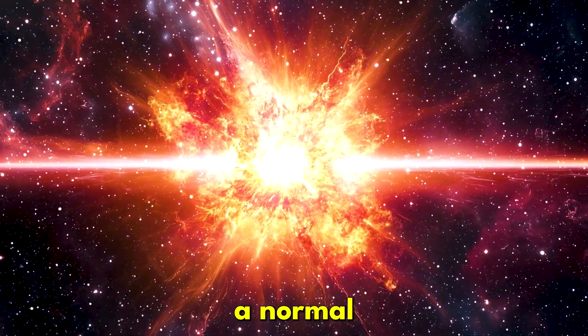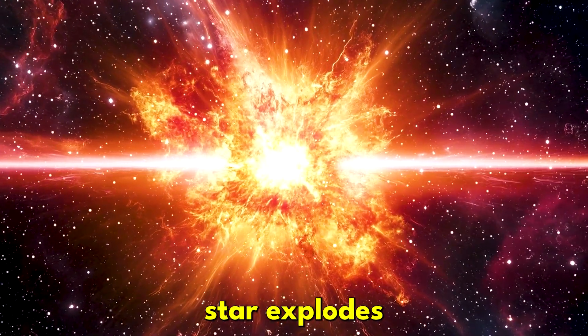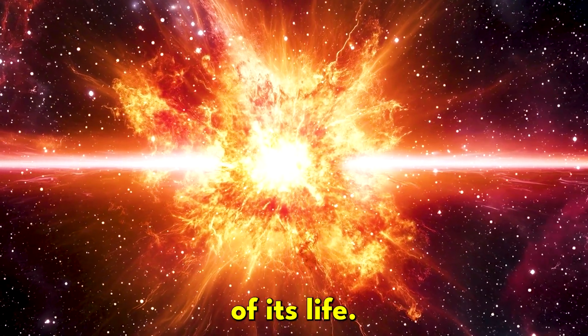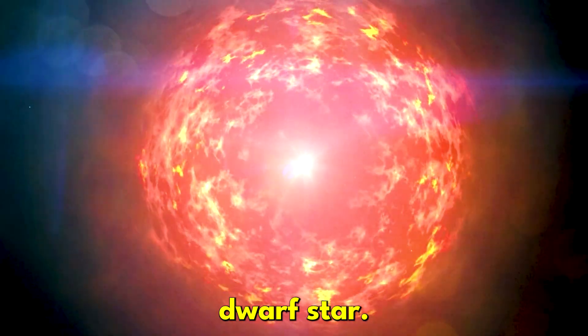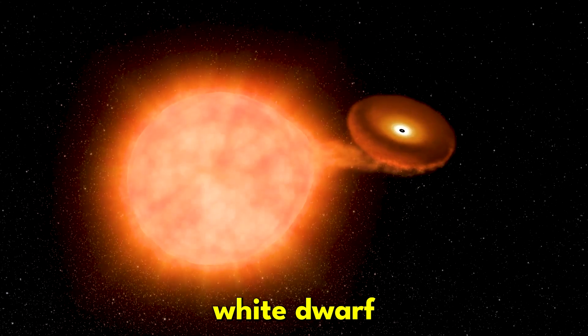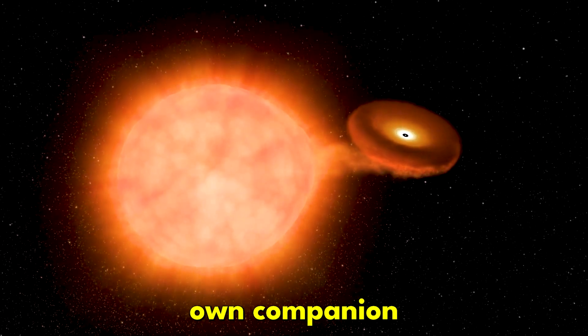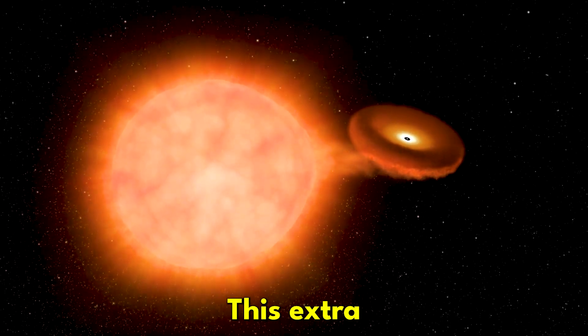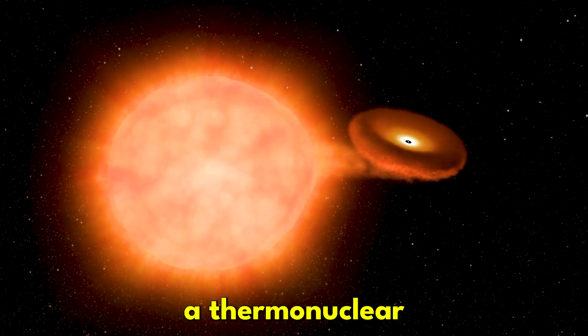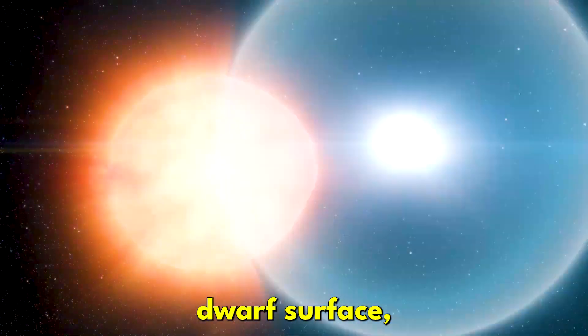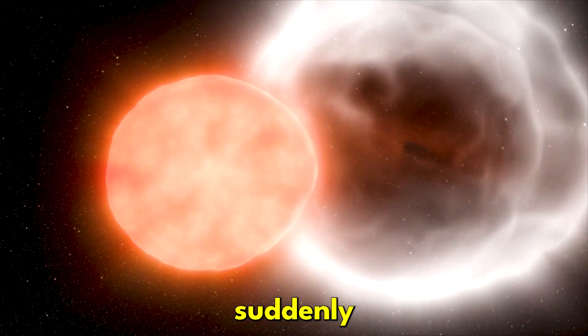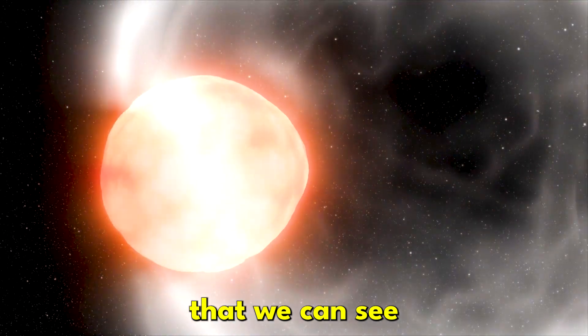Now, this isn't a normal supernova where a star explodes at the end of its life. Instead, it is more like a thermonuclear blast on a white dwarf star. It happened because a white dwarf star pulled too much gas from its own companion star. This extra gas triggered a thermonuclear explosion on the white dwarf's surface, making it suddenly much brighter that we can see from Earth.